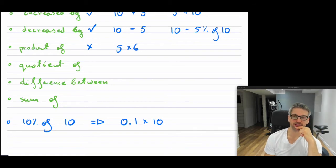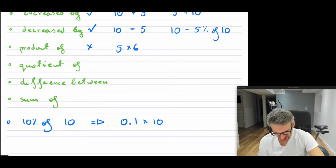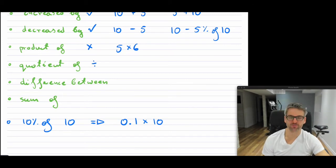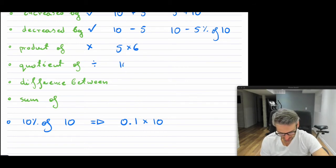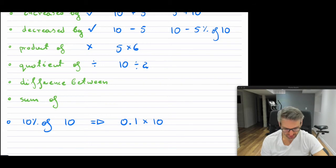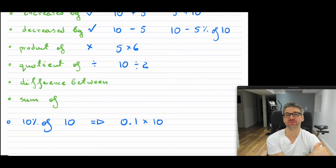"Quotient" — the word quotient means division. This is very rare in word problems, but you might see it. So "quotient of 10 and 2" would be 10 divided by 2. The word quotient means division between the numbers.